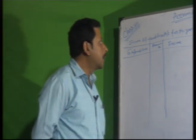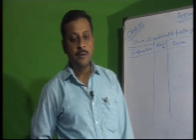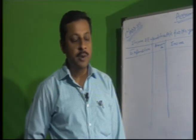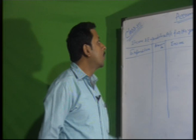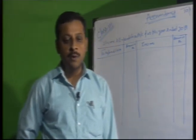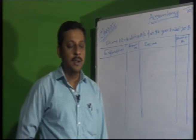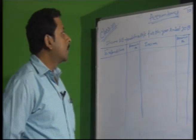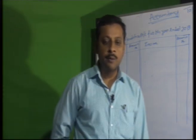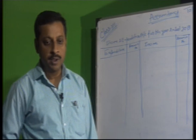Today we learn the adjustment entry — how can we do the adjustment entry in NPO accounting. We already done the final account in your previous class. In your previous class, you done the trading and profit and loss account and balance sheet — this is your final account.